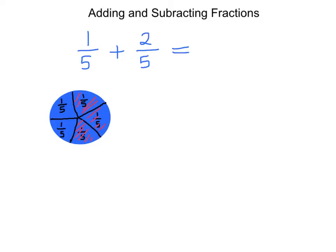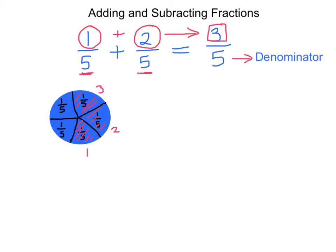What I end up with is 1, 2, 3 fifths. So let me write that in. The answer to this problem is 3 divided by 5. The 3 here was clearly got by adding 1 plus 2. This can only be done if these two numbers underneath the line of the division are the same. The number underneath the line of division is called the denominator, whilst the number above the line of division is called the numerator.